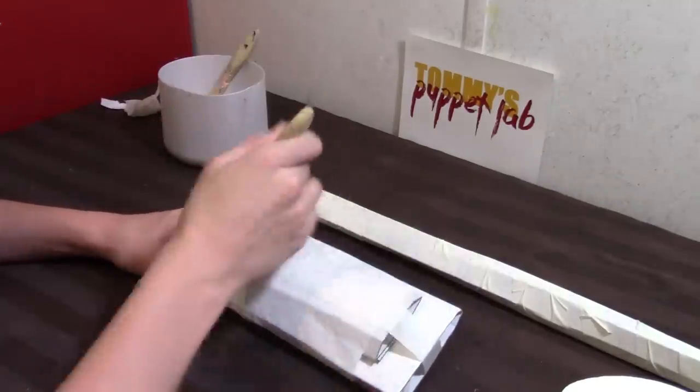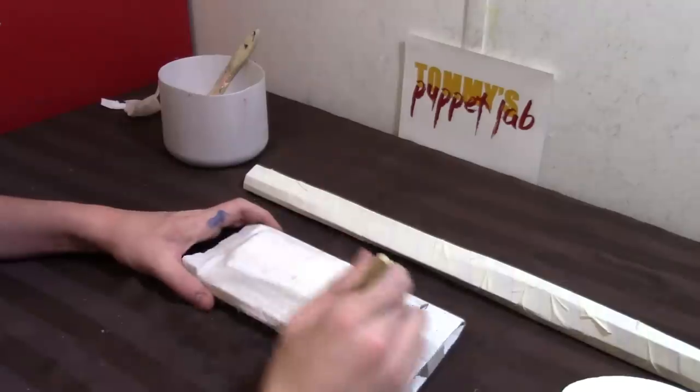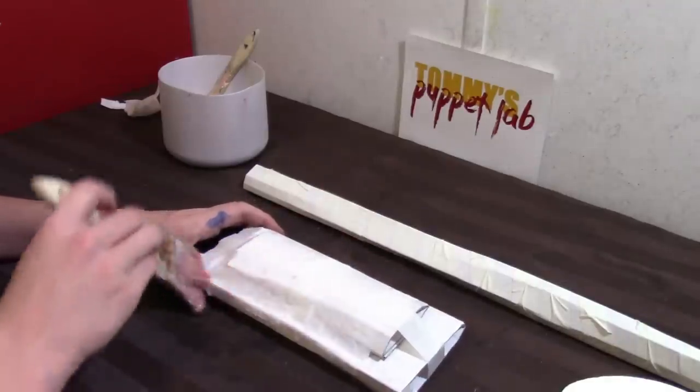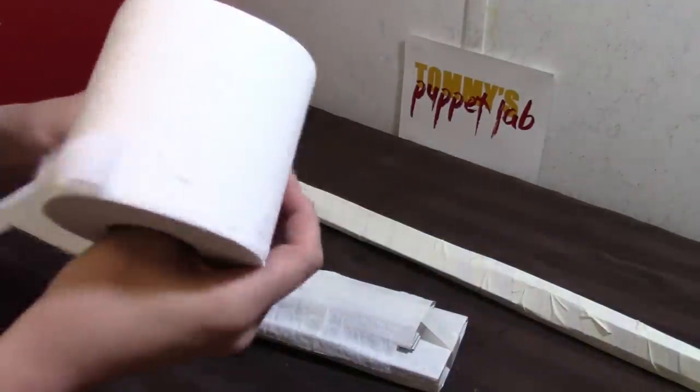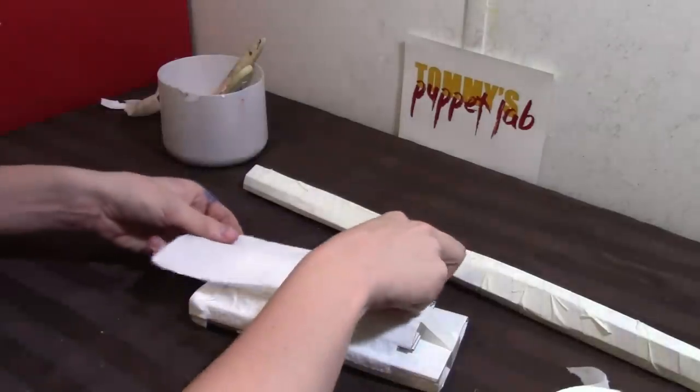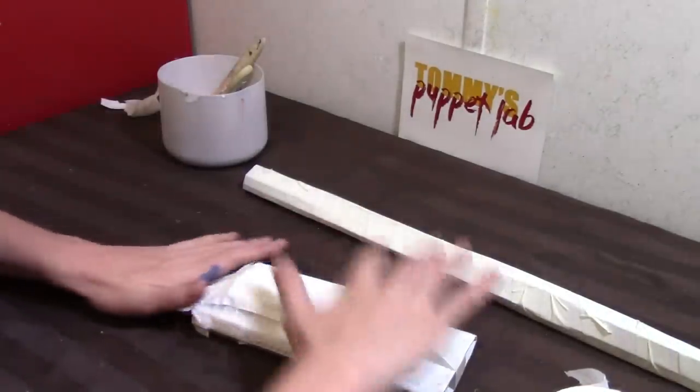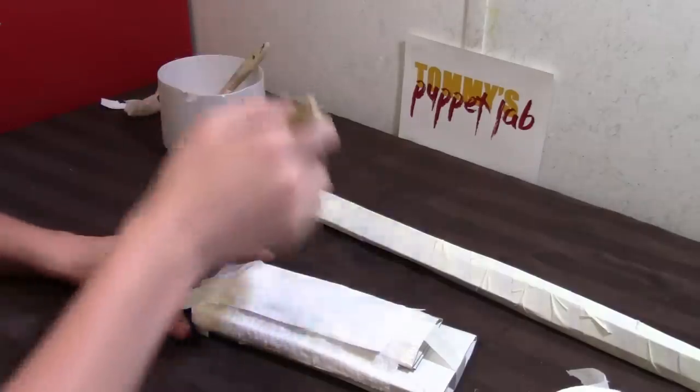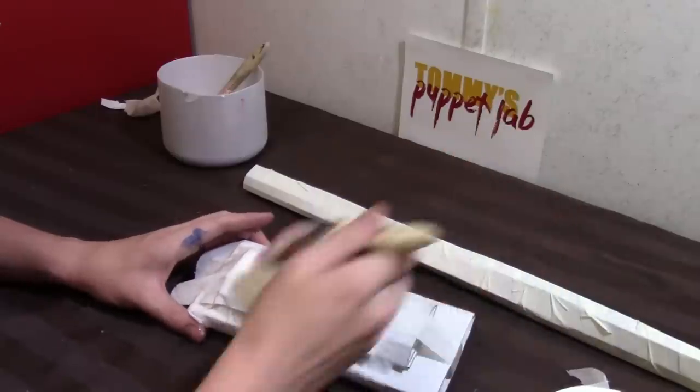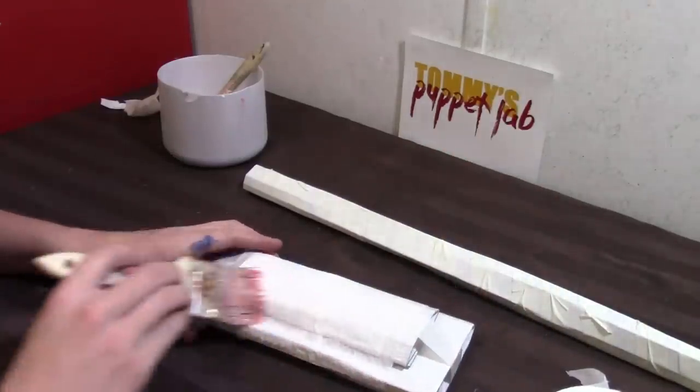Now you're going to brush glue on top of the tissue, like I am right now. And you're going to take some more tissue paper and put more over on top. And brush glue on top again. Keep doing this until you have about two or three layers.